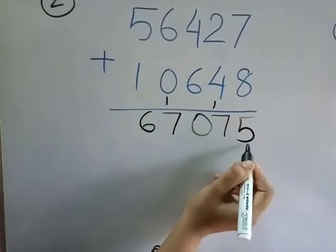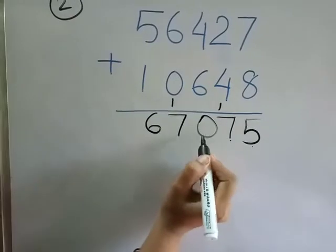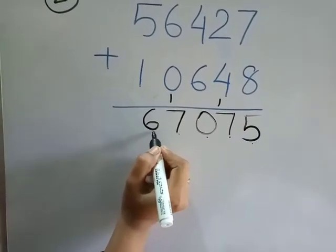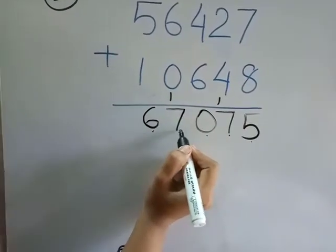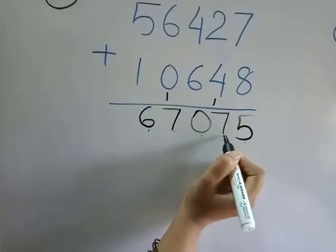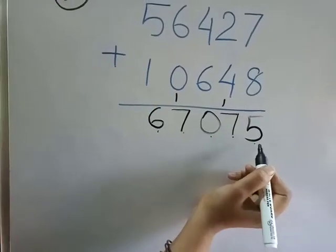Unit, tens, hundred, thousand, ten thousand. The answer is sixty-seven thousand, seventy-five.